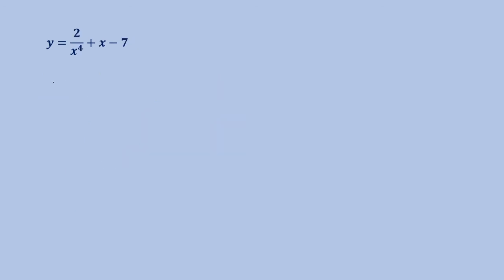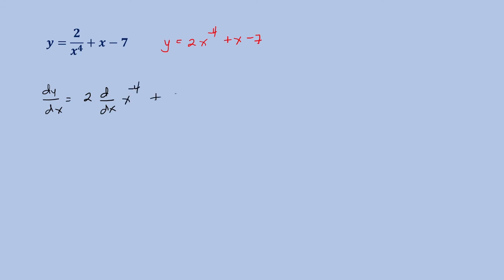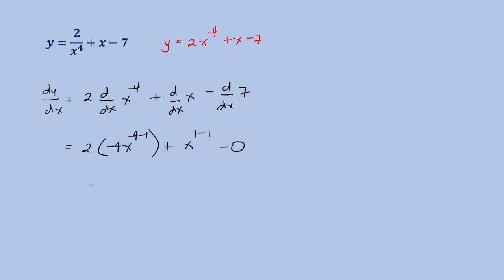Let's say we have y equal to 2 over x raised to 4 plus x minus 7. This can be rewritten as y equal to 2x raised to negative 4 plus x minus 7. Getting the derivative, we have 2 times the derivative of x raised to negative 4, plus the derivative of x, minus the derivative of 7. By the power rule, x raised to negative 4 gives negative 4 times x raised to negative 5, plus x raised to 1 minus 1.